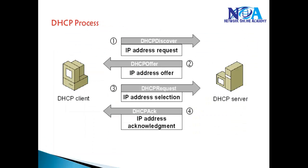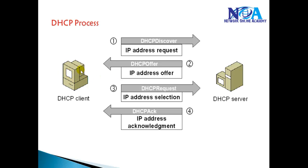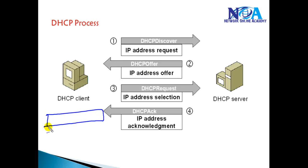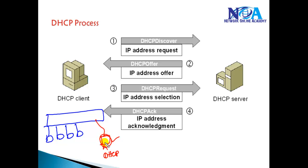The DHCP process happens in four steps, called the DORA process: Discover, Offer, Request, and Acknowledgement. When you select 'Obtain IP address automatically,' let's take an example — I have a LAN with some computers and a DHCP server. This DHCP server can be any Linux or Microsoft server operating system, or we can also configure a router to act as a DHCP server, which is what we'll do in Cisco courses.